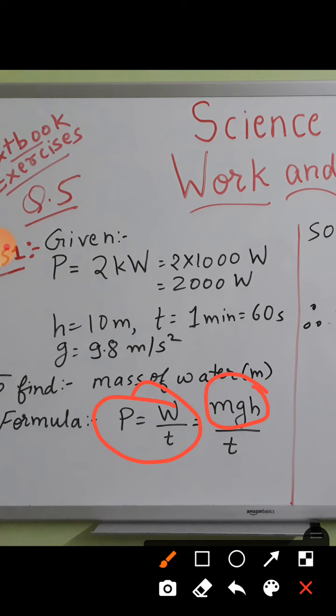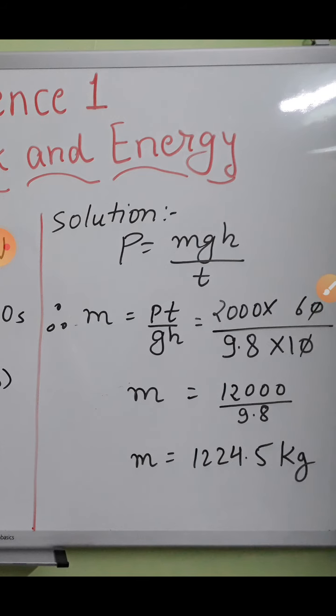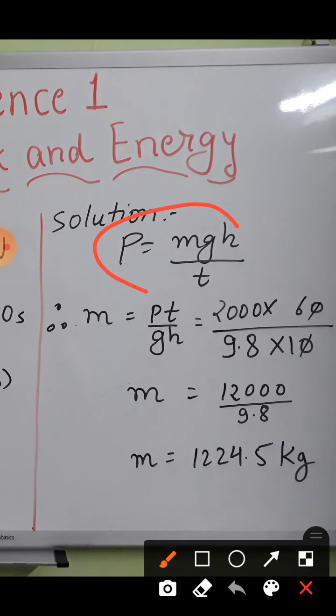How to solve? We have to calculate mass, so put other things on the other side. This t will go in multiplication form, and g and h are in multiplication form so they will go in division form. By rearranging the terms we get formula for mass as m equals pt divided by gh.